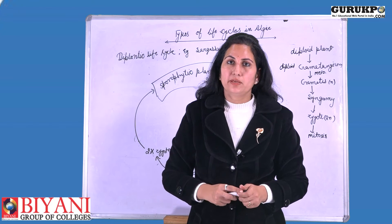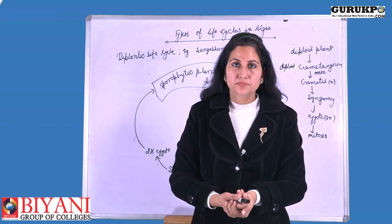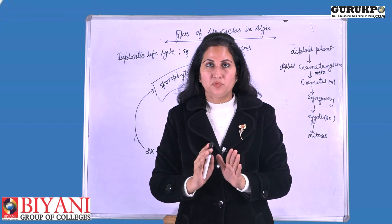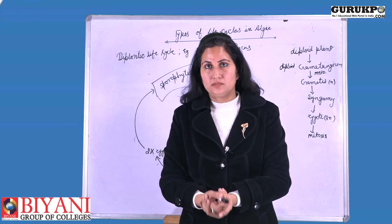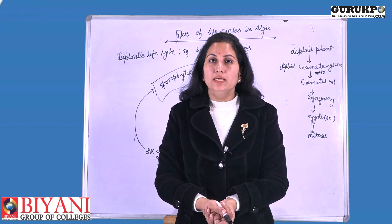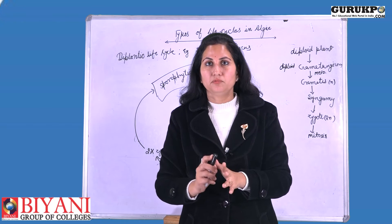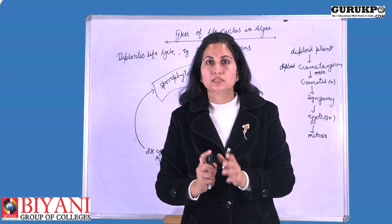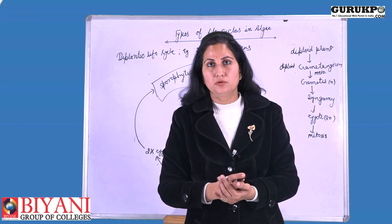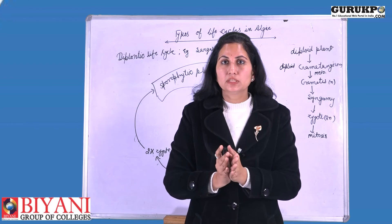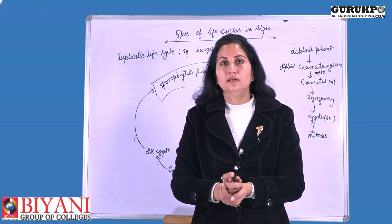Now we will discuss the diplontic type of life cycle. Here, the diploid phase overmasks the haploid phase. The plant is a sporophytic plant, that is a diploid plant. In this sporophytic plant there are gametangia, and these gametangia are also diploid in nature. In the gametangia, reduction division — that is meiosis — occurs, and after meiosis the haploid gametes are formed, which could be male or female gametes. The male and female gametes finally fuse with each other in a process called syngamy, and after syngamy the zygote is formed, which is again diploid in nature.